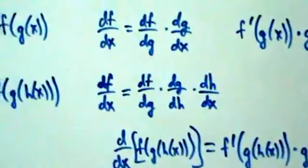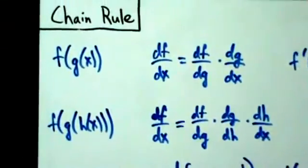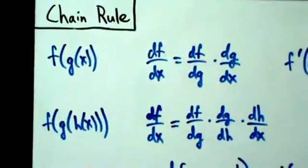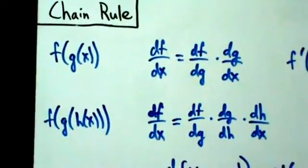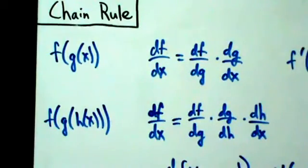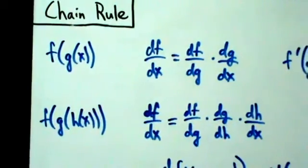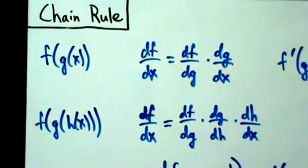That's sort of why it's called the chain rule. In the next video we'll do the formal proof with a lot of detail, and we'll see how to handle that flawed step from this proof.